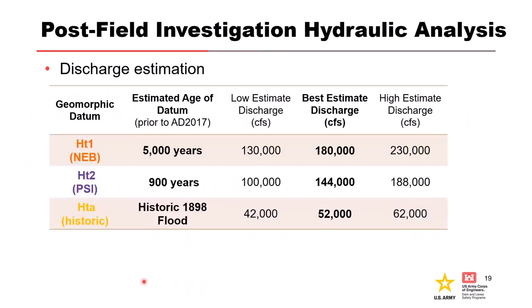Here is an example of elicited flow magnitudes for a paleoflood study. Note that in this example there's no age uncertainty documented since this presentation is concentrating on the hydrology and hydraulics, but in practice, uncertainty in age estimates is also quantified. We have a non-exceedance bound, a PSI, and a historic flood, each with a low estimate, best estimate, and high estimate of discharge — and in reality we'll also have low and best estimates for the age as well.